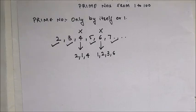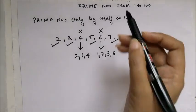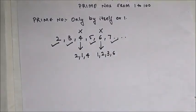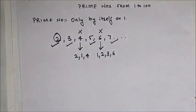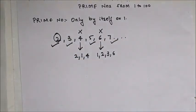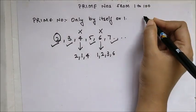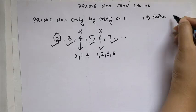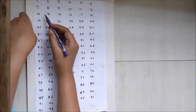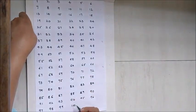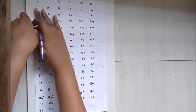We know a few prime numbers up to 20 — 2, 3, 5, 7, 11 — but remembering all prime numbers from 1 to 100 is a bit difficult. I would also like to mention that the prime number series starts from 2, not from 1, because in maths we take 1 as neither prime nor composite. So let's begin.